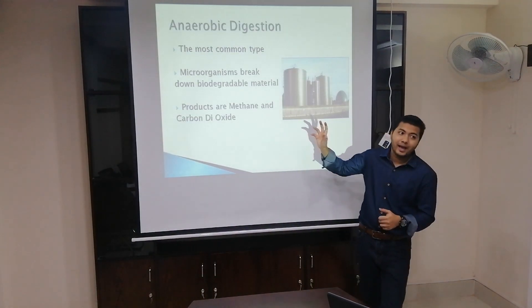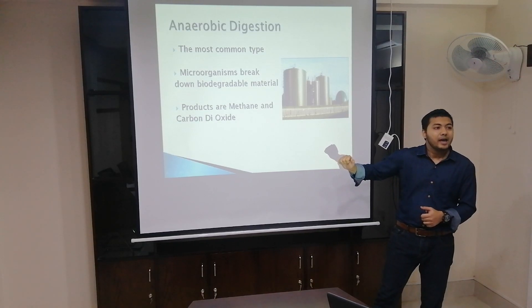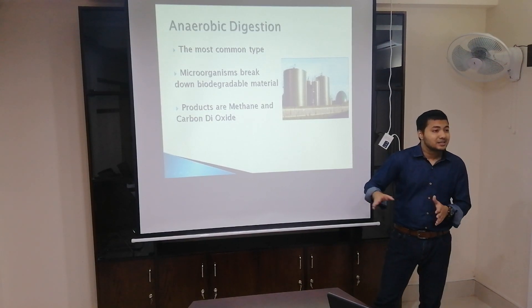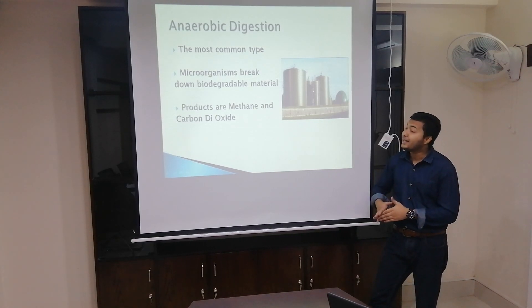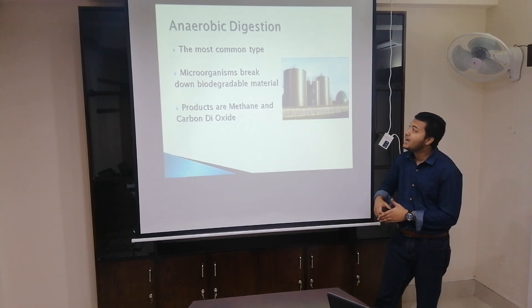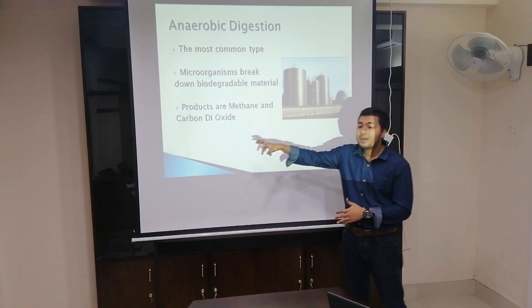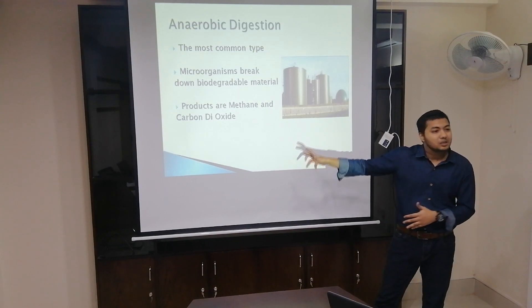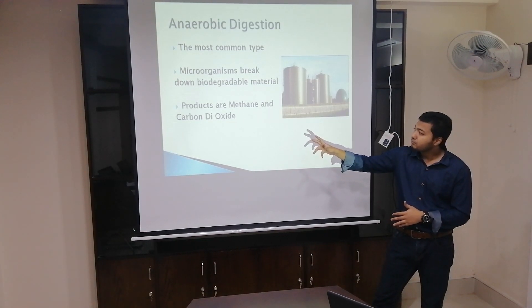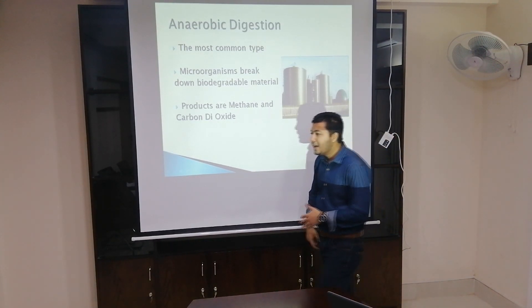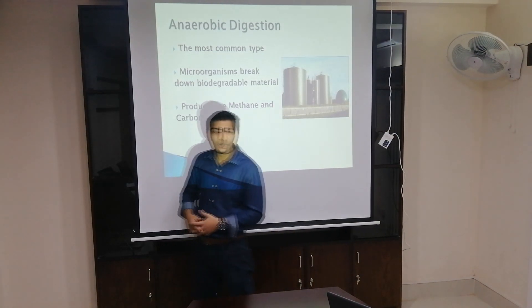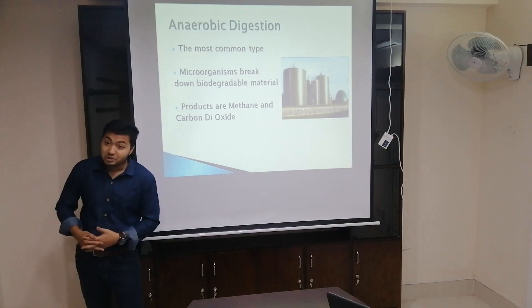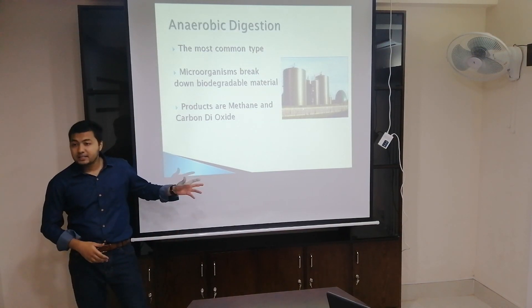The first one is anaerobic digestion, or AD. It is the most popular one and it consists of four basic stages: hydrolysis, acidogenesis, acetogenesis, and methanogenesis. In the last stage, methanogenesis, biogas is produced, which consists basically of methane and carbon dioxide. There are some parameters such as pH, temperature, nutrient content, and toxic substances which affect the efficiency.